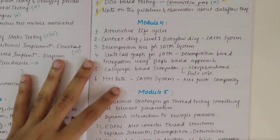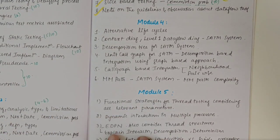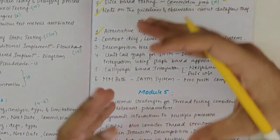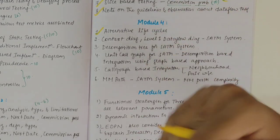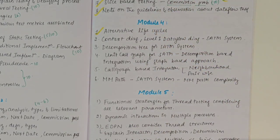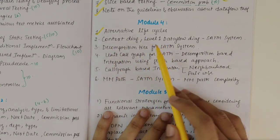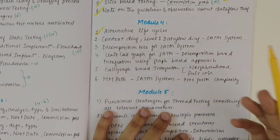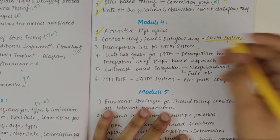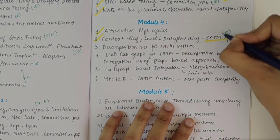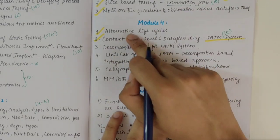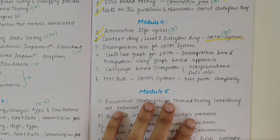Moving on to the fourth module, we have alternate life cycles. Give an introduction about the waterfall method and waterfall cycle, and then speak of the alternate life cycles — there are three to four of them and you should write all. Then we have the context diagram level one and data flow diagram for the SATM system — an important question that could be asked for 10 marks, as it is a lengthy answer.